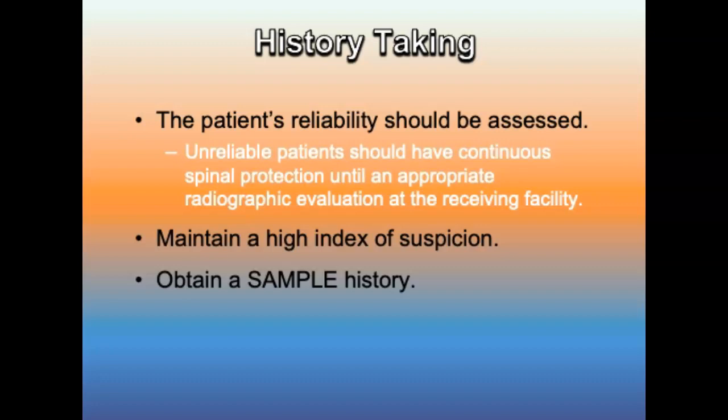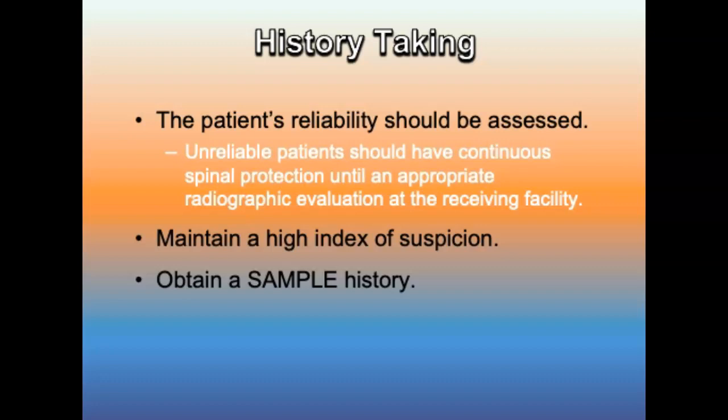When taking a history, assess the patient's reliability. Patients should be considered unreliable if they present with acute stress reaction, distracting injuries, or altered mental status due to brain injury or intoxication. Maintain a high index of suspicion and treat all patients with major trauma above the clavicle or found unresponsive as if they have a spinal injury. Obtain a SAMPLE history using signs and symptoms, circumstances of the incident, and forces to which the patient was subjected — including blunt or penetrating trauma, flexion injury, or torsion. For falls, note the height, what was struck, how the patient landed, and what they landed on. For vehicle crashes, note restraint use, position in the vehicle, and degree of damage.